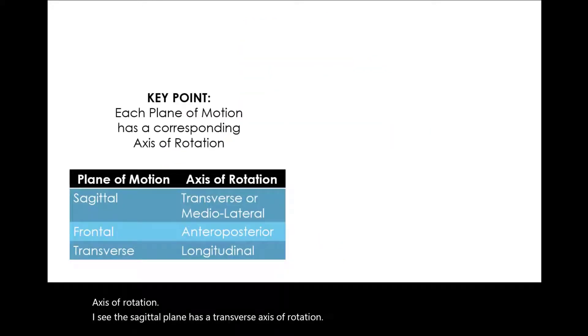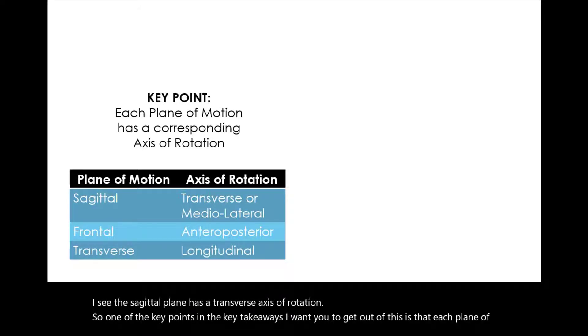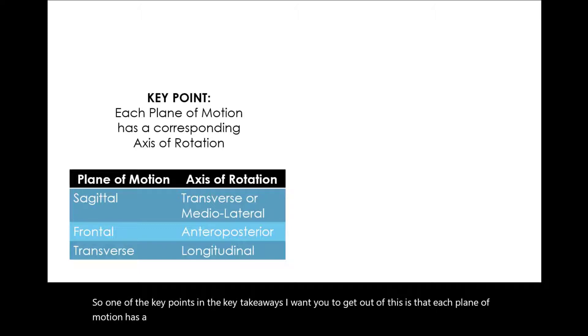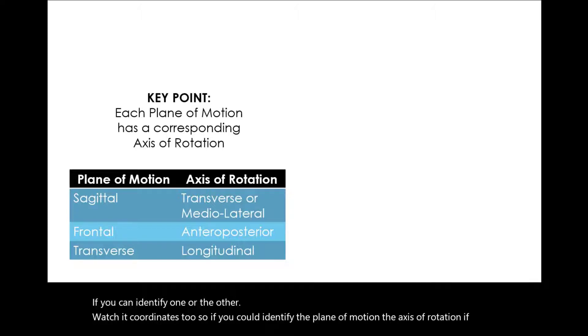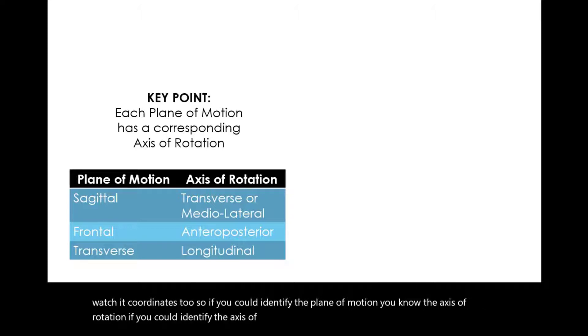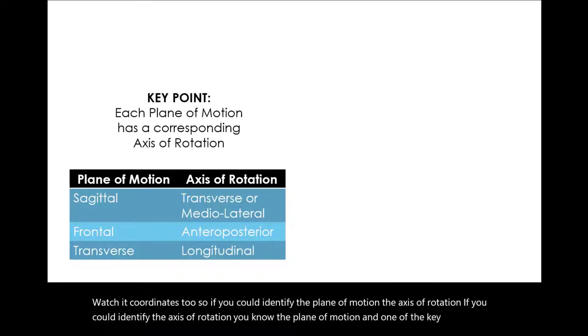One of the key points and key takeaways I want you to get is that each plane of motion has a corresponding axis of rotation. As you can see in the chart, if you can identify one or the other, you know what it coordinates to. If you could identify the plane of motion, you know the axis of rotation. If you could identify the axis of rotation, you know the plane of motion.